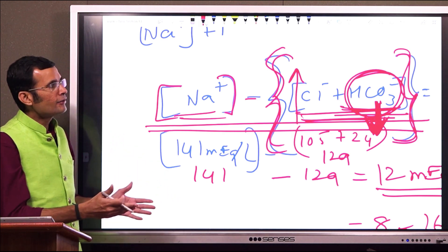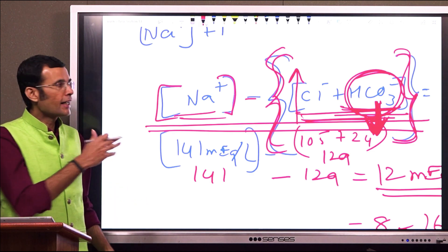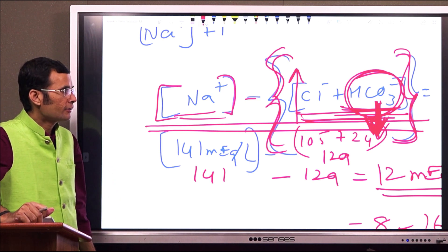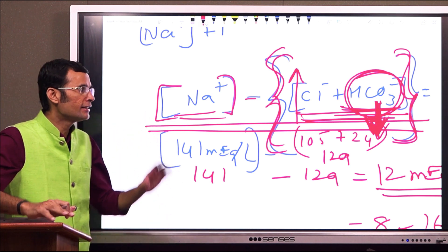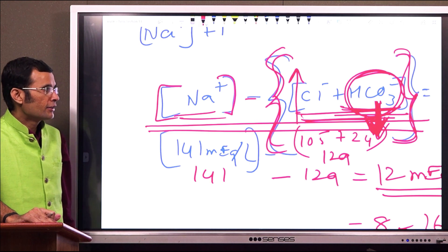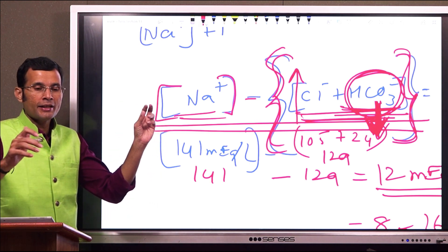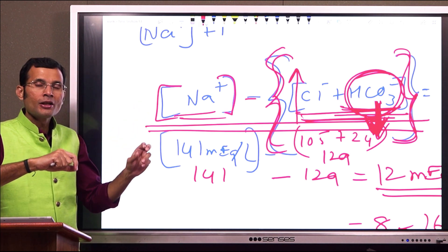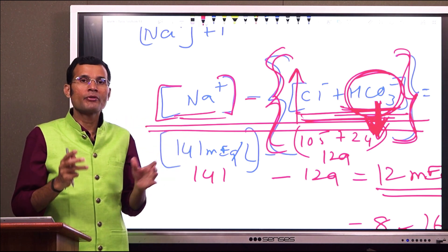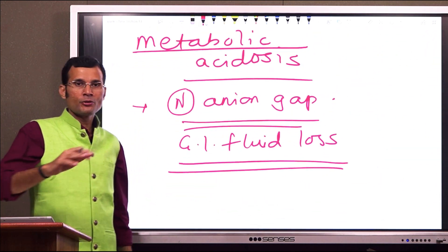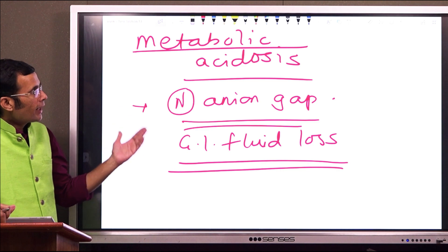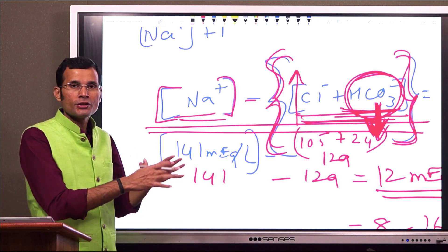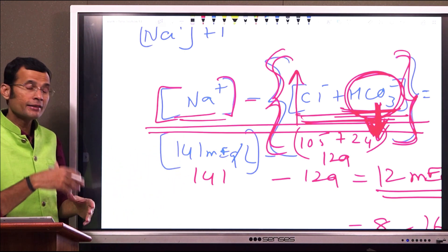In other acidosis conditions, the anion gap will increase because bicarbonate levels decrease in metabolic acidosis. In acidosis, H⁺ increases and HCO₃⁻ decreases. If the acidosis condition has chloride associated with H⁺, then chloride will also increase and the anion gap will remain normal. So remember: metabolic acidosis with normal anion gap versus metabolic acidosis with increased anion gap — this is the reason for calculating the anion gap and its clinical application.